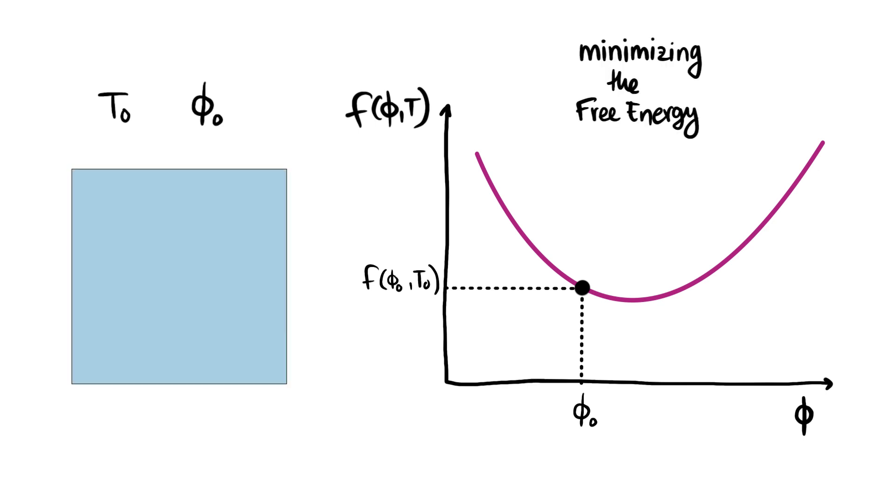At equilibrium systems minimize the free energy. Here it seems like our system should go to this point in the plot, but this would require changing the average concentration of the whole system and we keep that fixed.